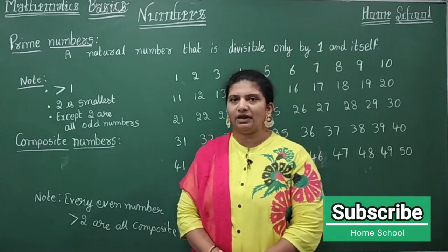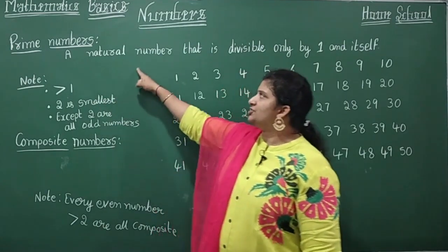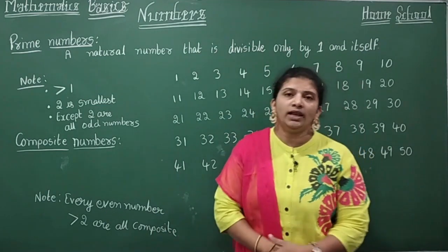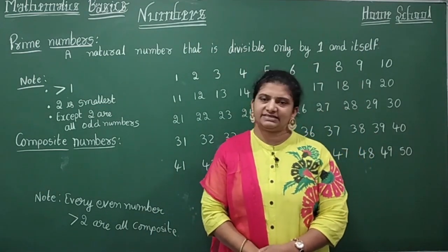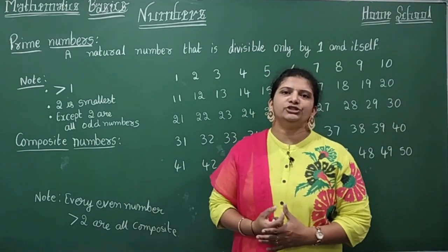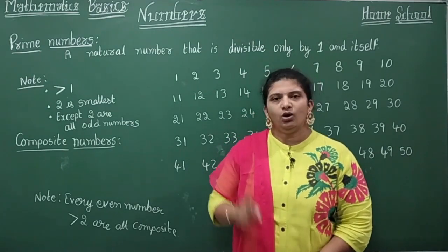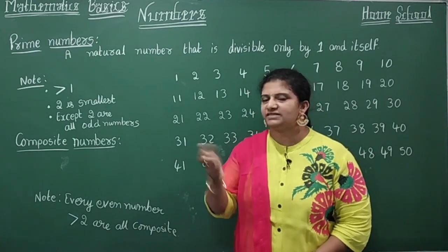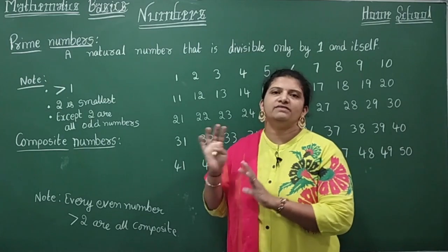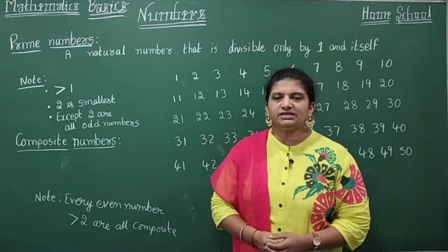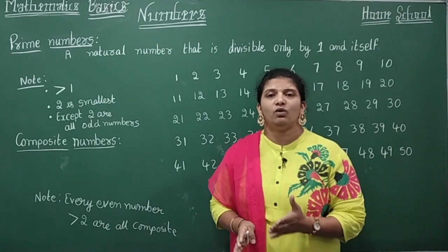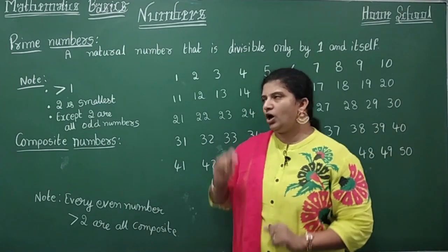What is a prime number? A natural number that is divisible only by one and itself. Any number — it should be divisible by only one and itself, meaning no other number should divide it. It should not have any factors other than one and itself.